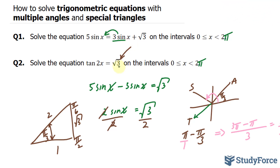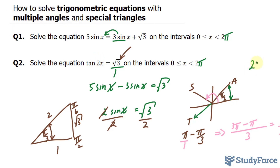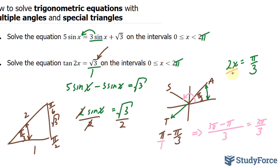There's a special triangle that has the square root of 3. Tangent is opposite over adjacent; opposite is the square root of 3 and adjacent is 1, so square root of 3 over 1 equals square root of 3. Our reference angle for quadrant 1 is pi over 3, meaning 2x equals pi over 3. Dividing both sides by 2 gives us x equals pi over 6 radians.